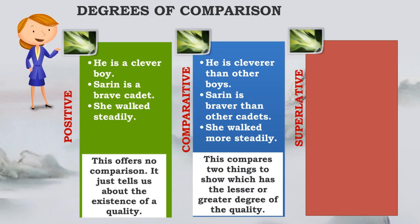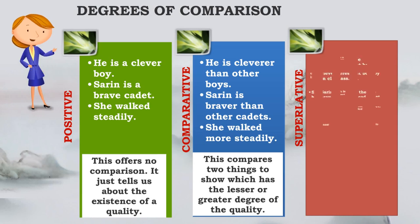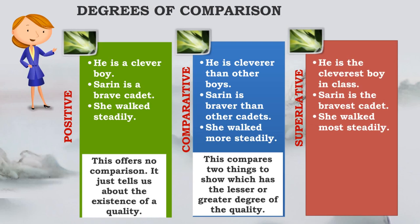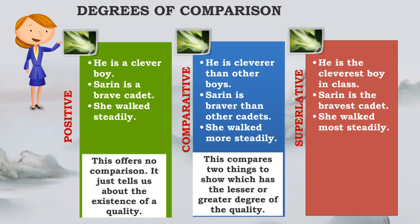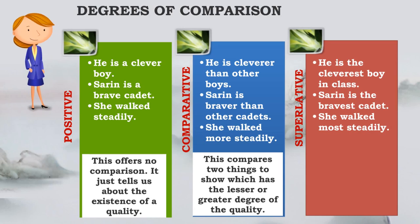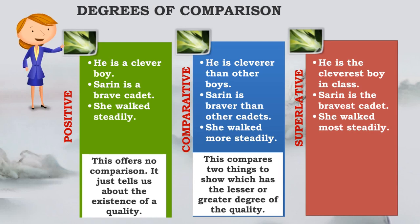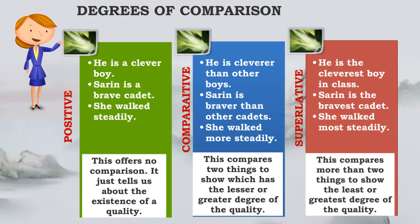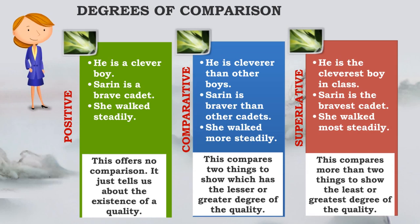The comparative compares two things to show which has a lesser or greater quality. You are comparing two different entities. In the superlative, 'He is the cleverest boy in class' — the comparison is of one with many. 'Sareen is the bravest cadet' — there is a comparison with many cadets. 'She walked most steadily' — most steadily among some people. The superlative compares more than two entities to show the least or the greatest degree of the quality. These are the three degrees of comparison.